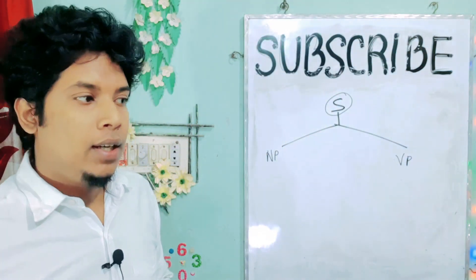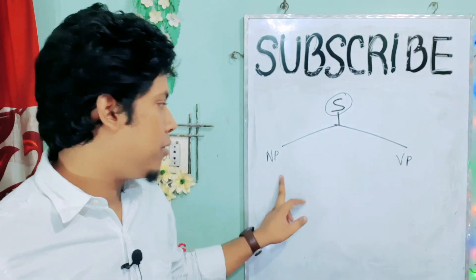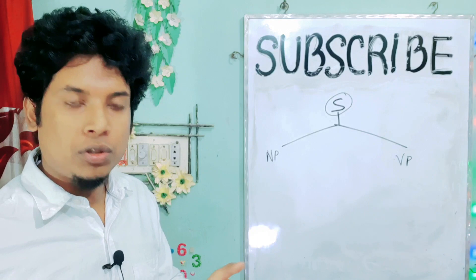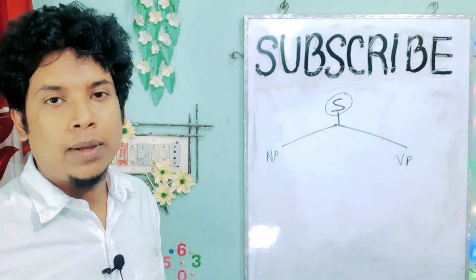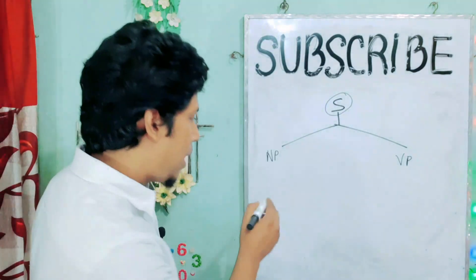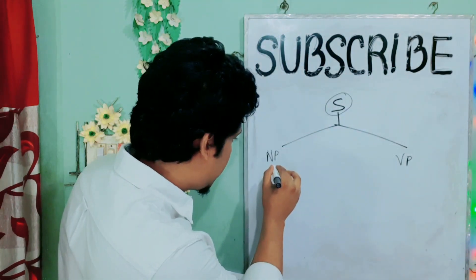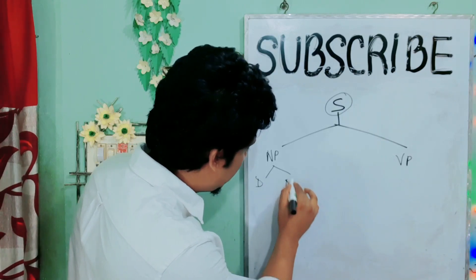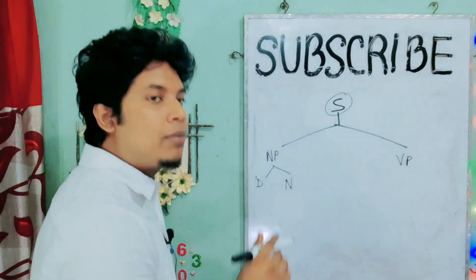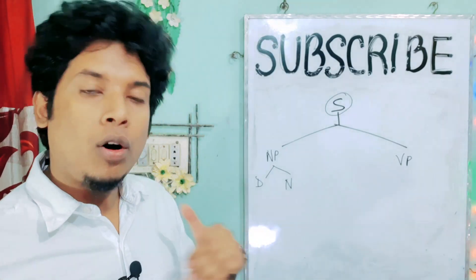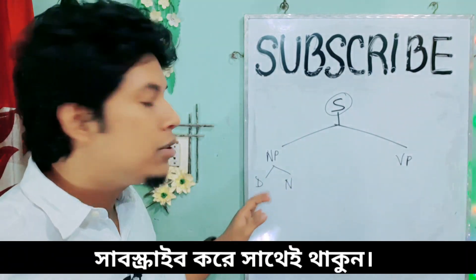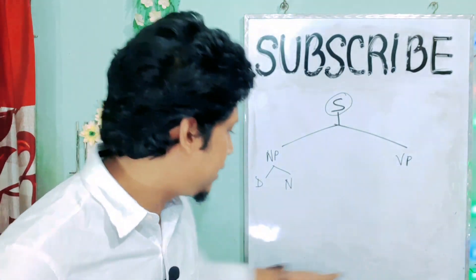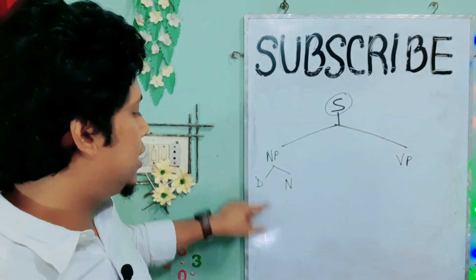So, this is the sentence. We have to place the sentence in our first position. This is the noun phrase, and this is the verb phrase. It is called a Determiner, which is associated with the noun. Determiners include words like 'some,' 'few,' and similar words. This is the Determiner and the noun.